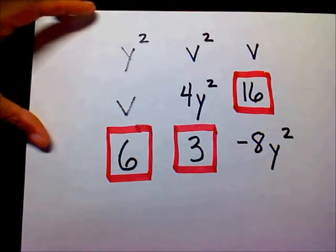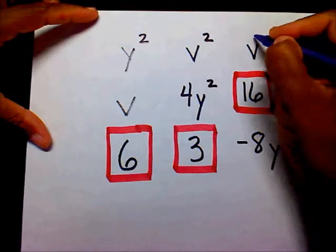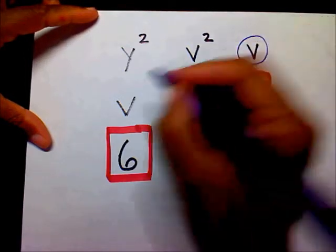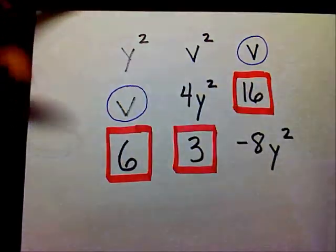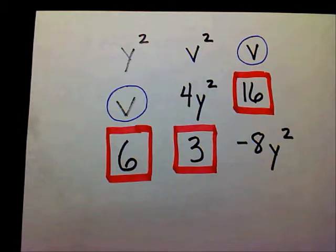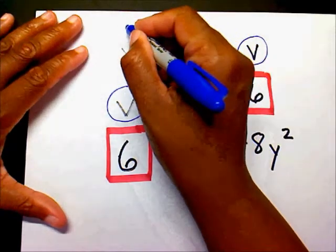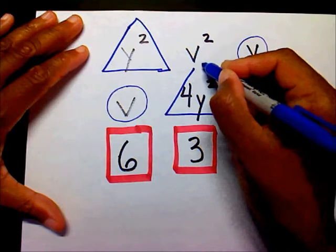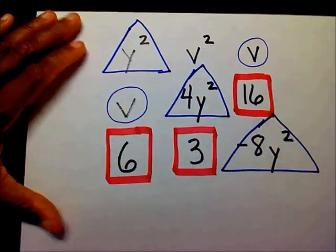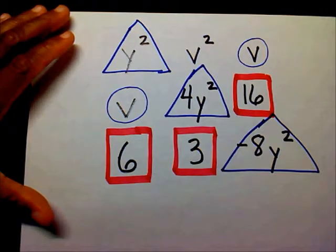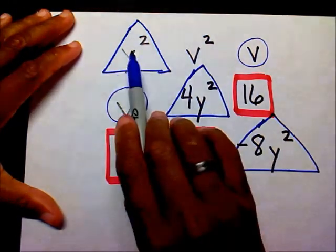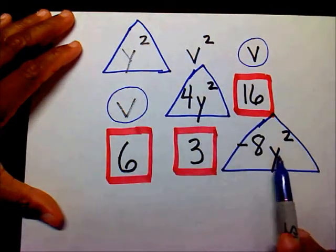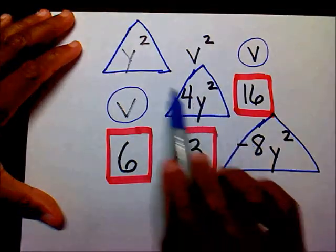Another pair: we have a V here and a V here. Those are like terms because both of them are just V — it's just a variable. And here's a Y-squared here, here's a Y-squared here, and here's a Y-squared here. These are like terms because it has Y-squared, Y-squared, Y-squared. The number in front does not matter when you have variables.